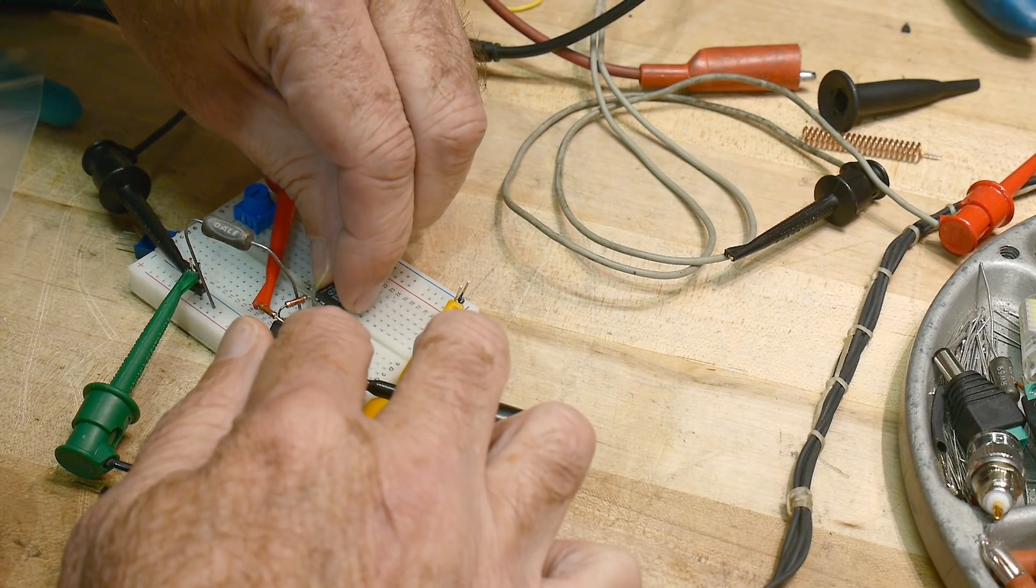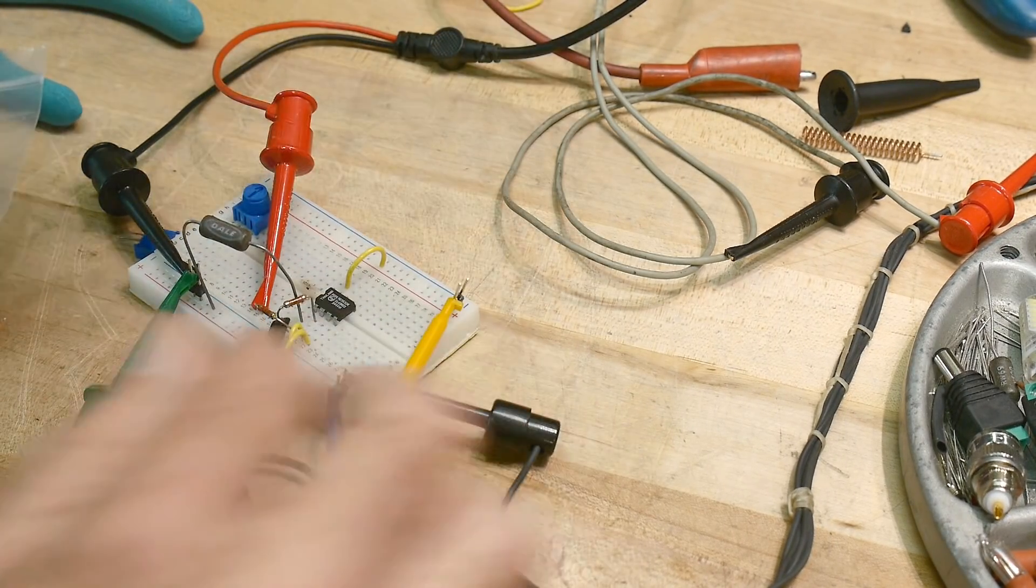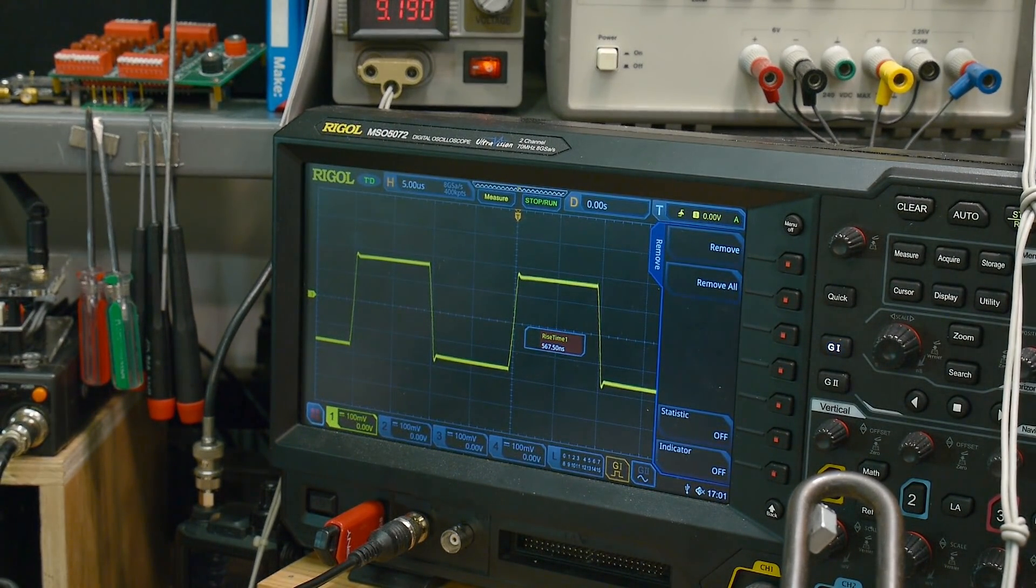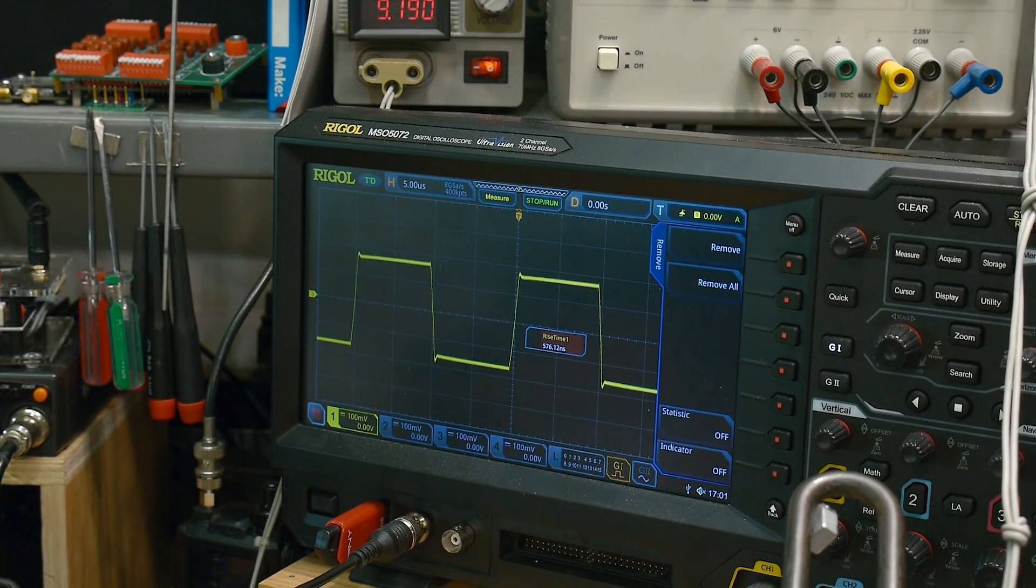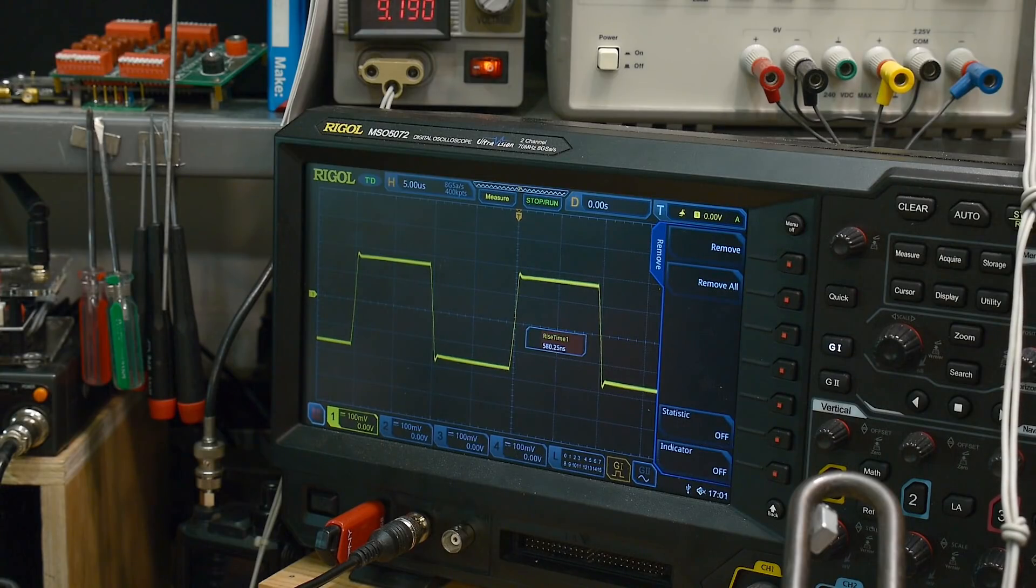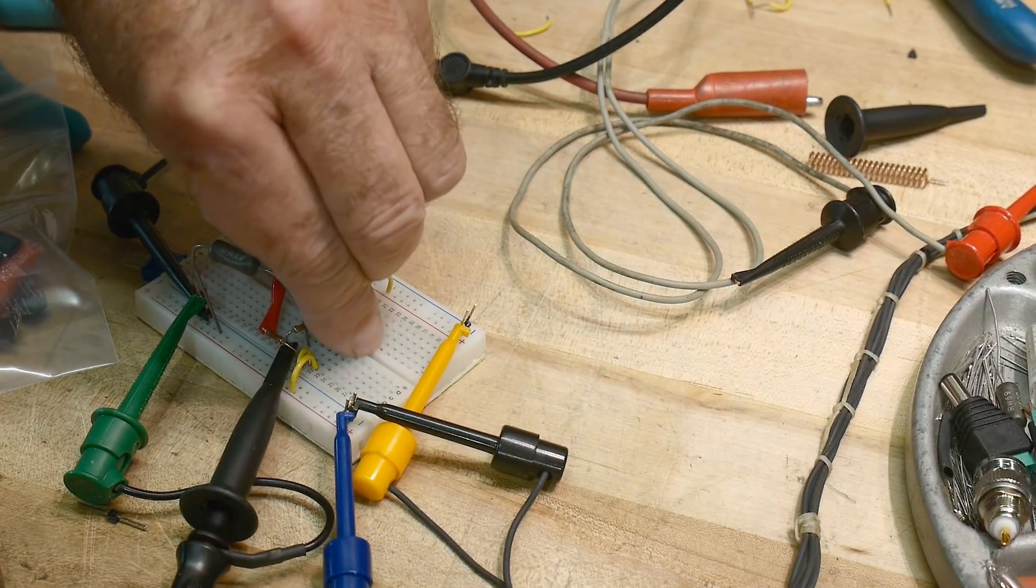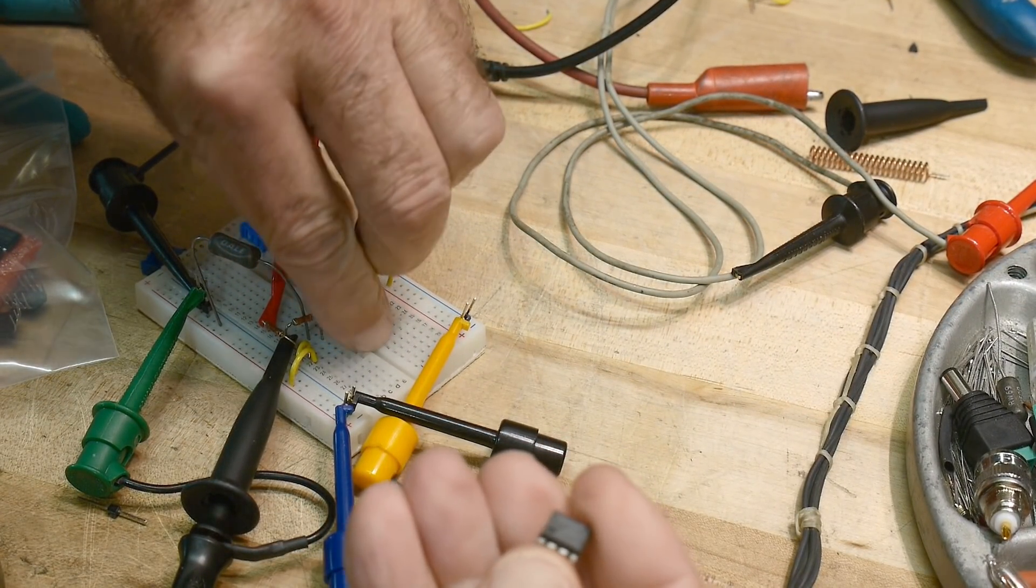Just to refresh your memory of what a real op-amp is supposed to look like, pop this one back in. Yeah, here's a keeper. That was a Phillips NE 5532, and I have several good parts.